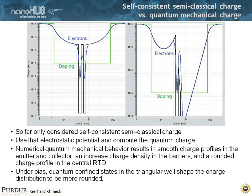That means the Fermi level should be at a place that generates a half-full occupation. But the central RTD is non-equilibrium — there is no Fermi level defined. The semi-classical calculation assumed that the Fermi level dropped, and that was the assumption. Here, in non-equilibrium Green's functions, we don't assume a Fermi level — we get the charge automatically. And roughly it should be half of the state in a symmetric device. That's why the charge is actually larger than the semi-classical charge, which dropped the Fermi level halfway.